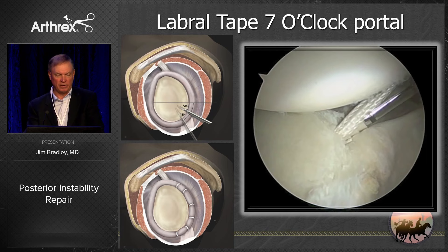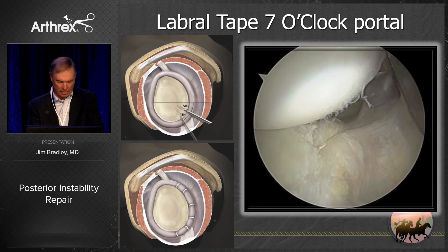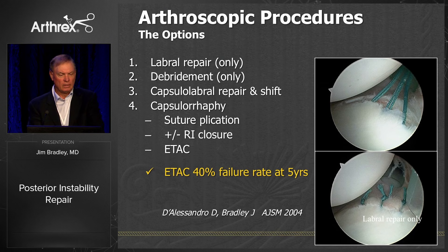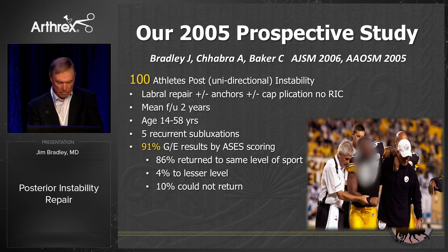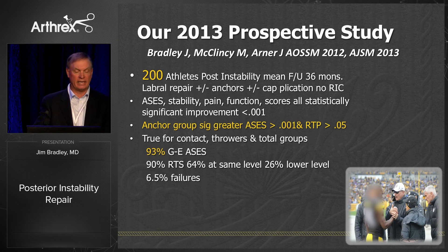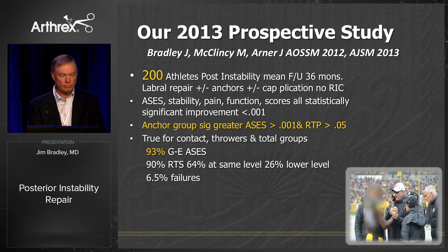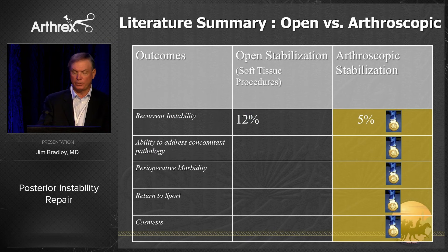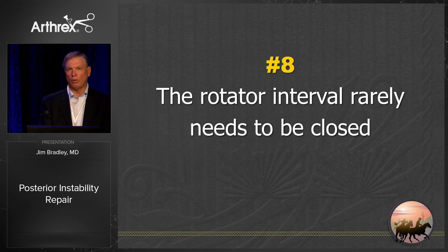Don't use thermals. Don D'Alessandro and I did a study around 2004 and had a 40% failure rate when using any type of thermal. In our 2005 prospective study of 100 patients, we had 91% good to excellent results and 86% return to sport. At 200 patients, it was clear that the suture anchor group had significantly better ASES scores and significantly better return to sport than the non-suture group.